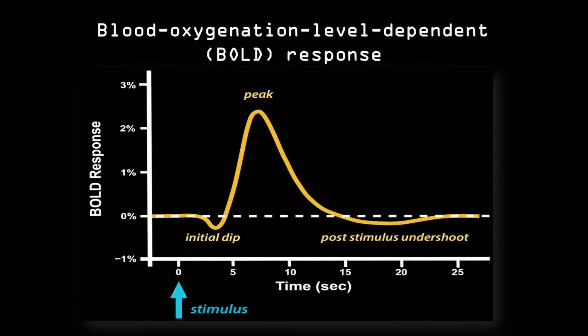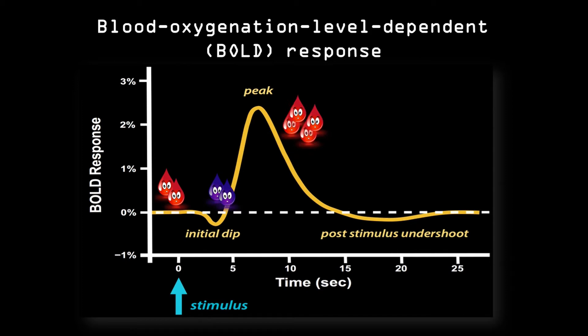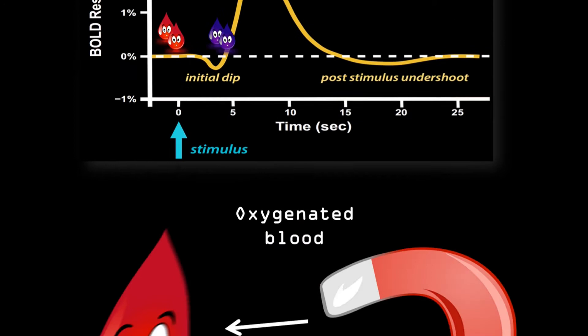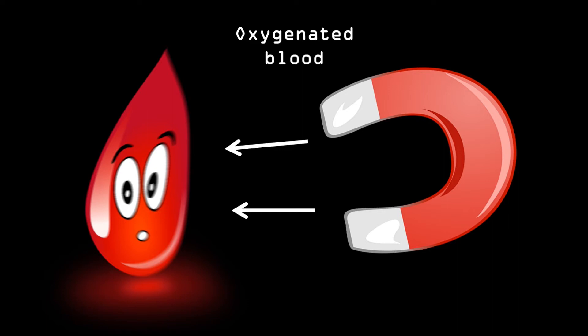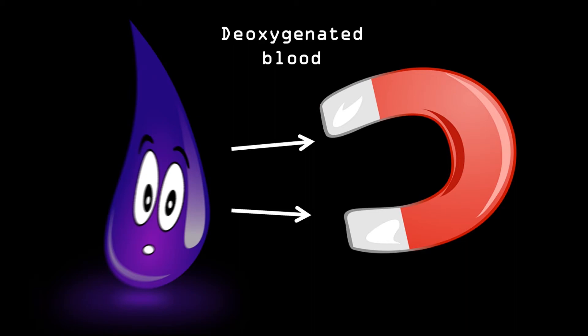So how does an MRI scanner measure this functional signal? Well, oxygenated hemoglobin has diamagnetic properties, meaning that it is slightly repelled by the magnetic field. On the other hand, deoxygenated blood has paramagnetic properties, meaning that it is slightly attracted by a magnetic field.